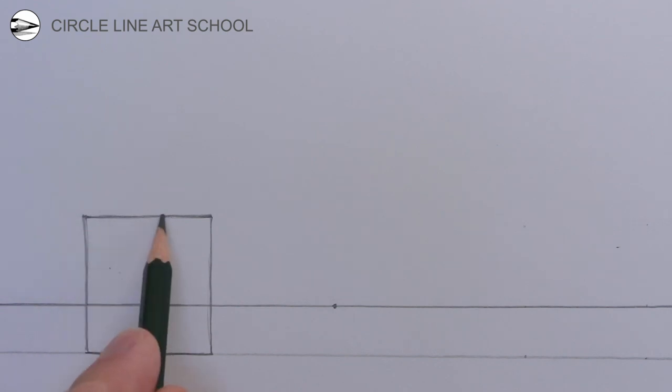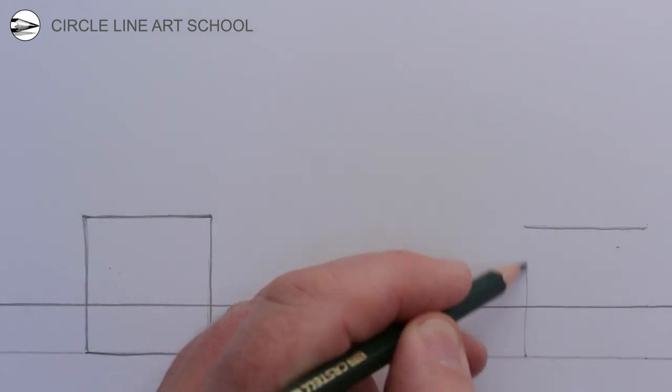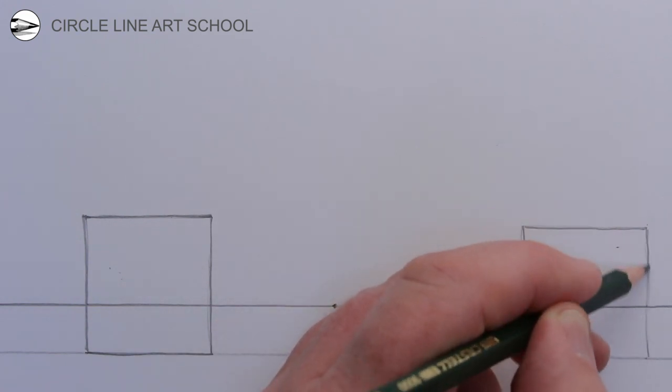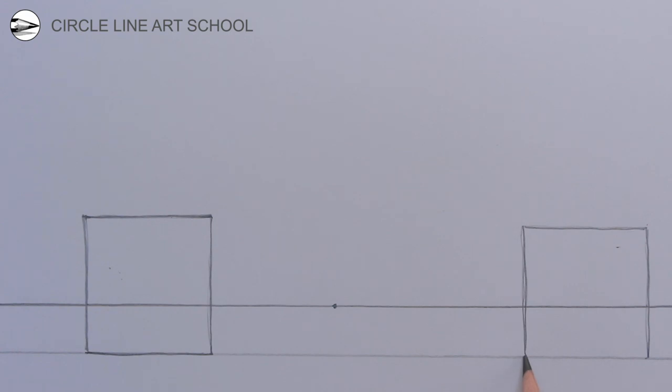Now we can repeat this on the right hand side of the drawing, another rectangle for another front of a shipping container, using the bottom horizontal line as a baseline.